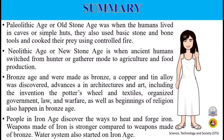The Neolithic Age or New Stone Age is when ancient humans switched from hunter-gatherer mode to agriculture and food production. They domesticated animals, cultivated cereal grains, and achieved pottery making through mechanical principles. They polished hard axes for plowing and tilling the land, and began to settle in plains. Advancements were made not only in tools but also in farming, home construction, pottery, sewing, and weaving.